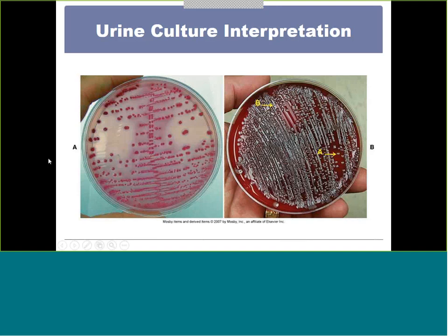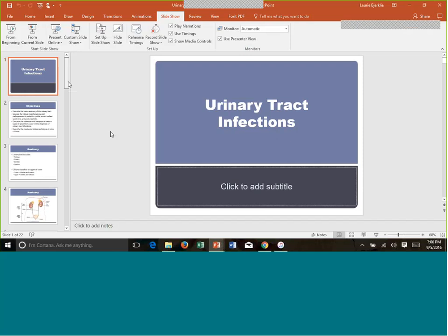Here are examples of blood agar and MacConkey agar plates. When one organism is really predominant — heavily grown on both plates, looking like a lactose-fermenting gram-negative rod — that's your pathogen. A small second colony type present in low numbers would just be a contaminant. That's it for UTIs: know the difference between upper and lower UTI, and know when you would work something up or not.